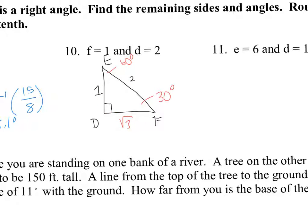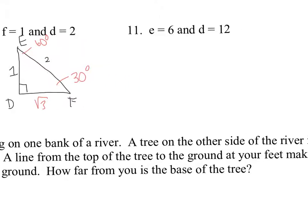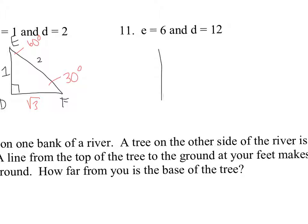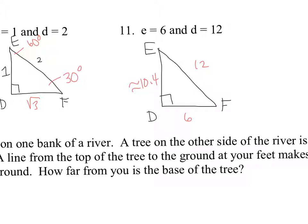For number 11, label the triangle DEF with E opposite the E angle equal to 6 and hypotenuse equal to 12. Using the Pythagorean theorem gives the remaining side as approximately 10.4. This is a 30-60-90 triangle since the short side is 6 and the hypotenuse is 12. Therefore angle E must be 60 degrees and angle F must be 30 degrees.